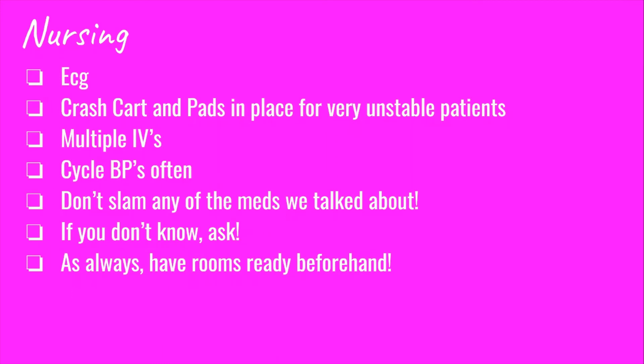For specific nursing considerations: with any unstable or crashing patient, you need to have the crash cart handy, and even the pads in place in case the patient codes. Have your rooms ready — suction, bag-valve mask, and all supplies needed in critical situations. With AFib specifically, get an ECG as soon as possible and establish multiple IVs because you'll be giving different medications simultaneously. Cycle your patient's blood pressure often, especially if they are super critical. Most importantly, do not slam any of the medications. The only time you ever fast-push medications is in a code, when the patient has no heart rate and is not breathing.